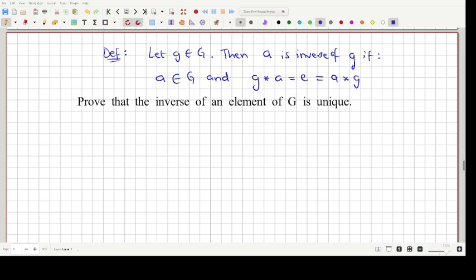Again, A is the inverse, G is the element under consideration, and star is the operation defined.